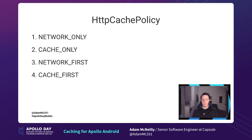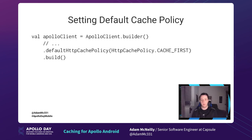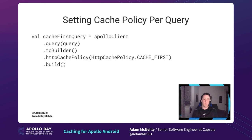We also have network first and cache first. Network first goes to the network; if it can't get a response, it tries to read from cache. Cache first checks if we have something in cache — yes, return that; no, go to the network. We have two ways to set the cache policy: setting a default on our Apollo client using the default HTTP cache policy builder method, which applies to all queries, or setting it per query on the query object that Apollo creates for us.